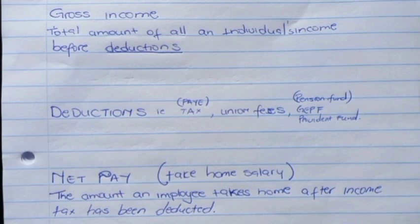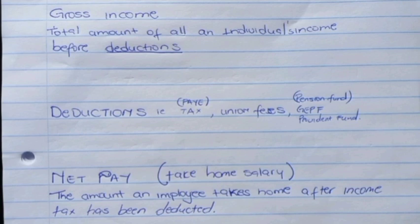The reason I want us to learn these words first is because in income tax there are other deductions and other types of income that can get very confused with net pay. So let's know these terms first. Gross income is the total income of an individual before any deductions — before they deduct anything. Whatever you have earned that month, including overtime, allowances, and everything like that, is your gross income.